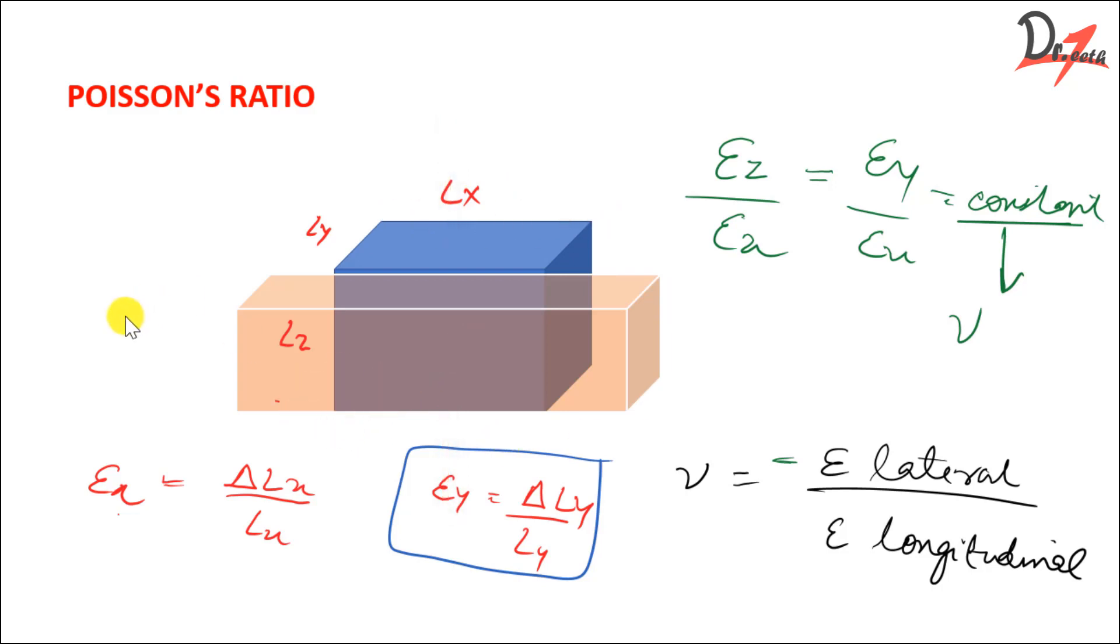Lx is the original length in the x-axis and this delta Lx will be the newer one. Similarly delta y and delta z. Then we calculated the strain values in the x-axis, y-axis and the z-axis. And what we found - by dividing the change in length by the original length.